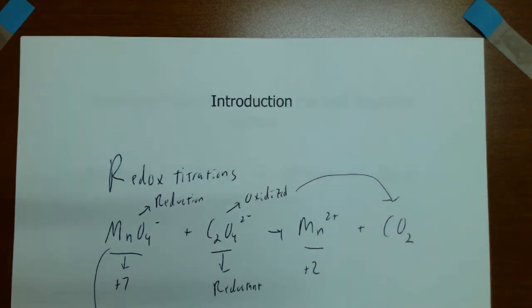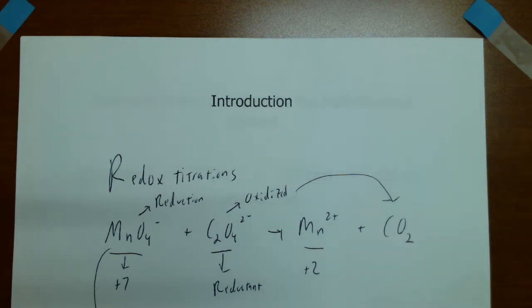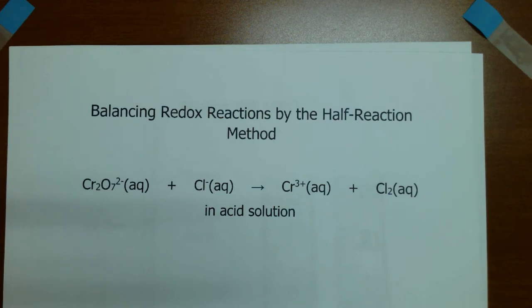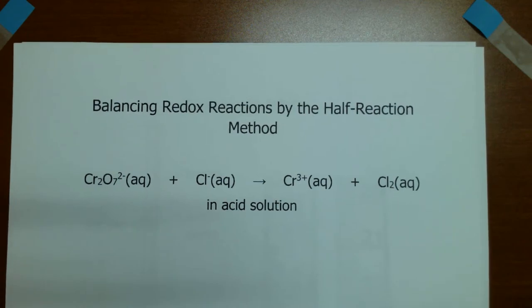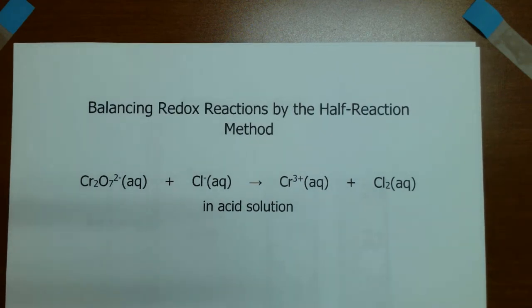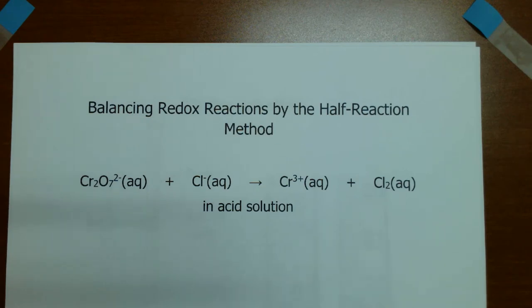I'm going to step through the process of balancing a redox reaction, and then we'll look at some experimental details and calculations before doing the experiment. The reaction I'll use as an example is not the one in the experiment — in fact, the one you're doing is already balanced for you. I just want to show the process using a technique called the half-reaction method, where we look at the oxidation and reduction parts separately and then match them up in terms of electrons.